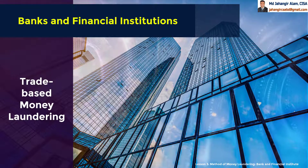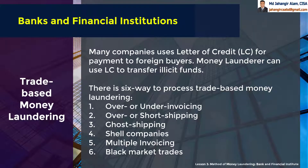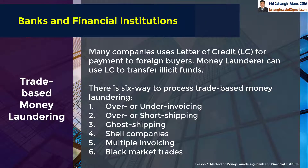Trade-Based Money Laundering. Many companies use letters of credit (LCs) for payment to foreign buyers, and money launderers can use LCs to transfer illicit funds. There are six ways to process trade-based money laundering: 1) over or under invoicing, 2) over or short shipping, 3) ghost shipping, 4) shell companies, 5) multiple invoicing, and 6) black market trades.